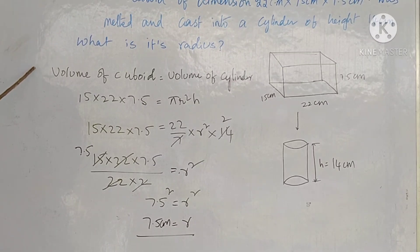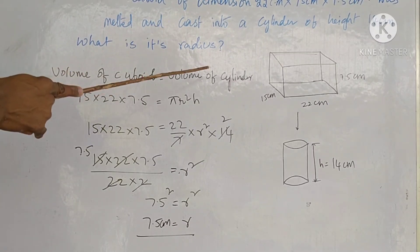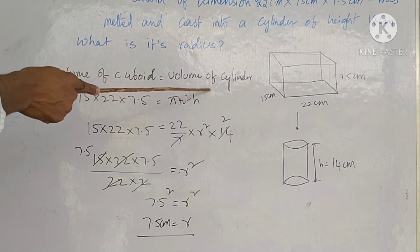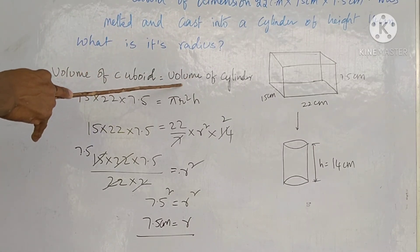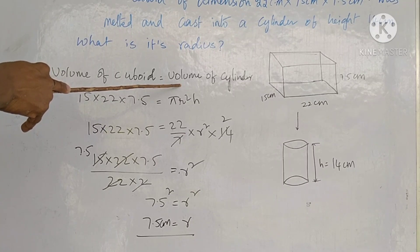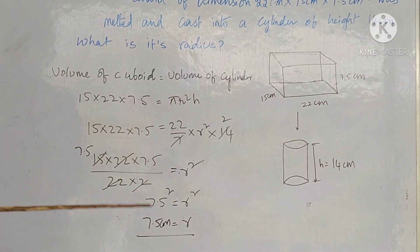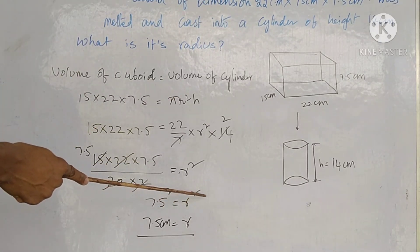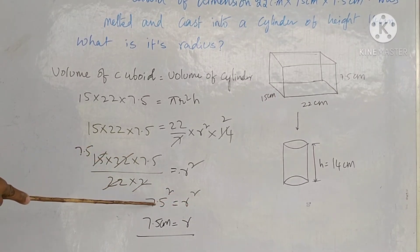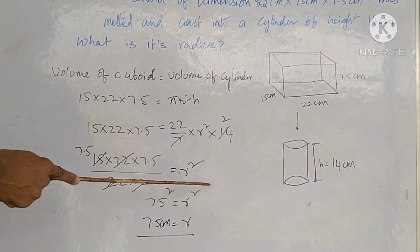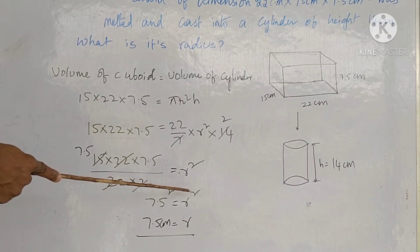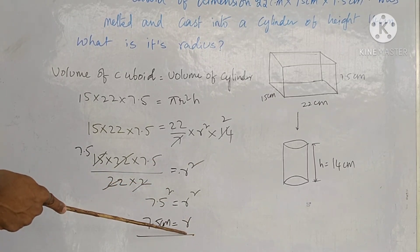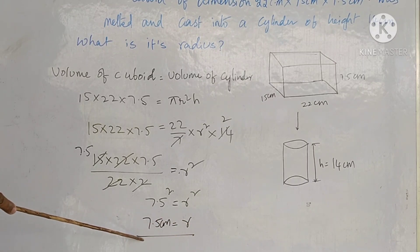This is a very important point: volume of cuboid equals volume of cylinder. Volume of cuboid is L × B × H and volume of cylinder is πr²h. After simplification, r² = 7.5², so taking square root, r = 7.5 centimeters.